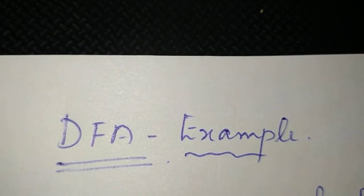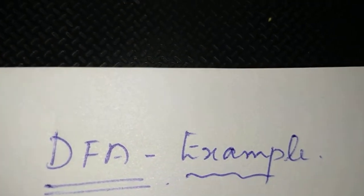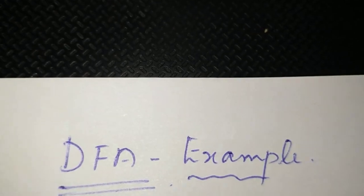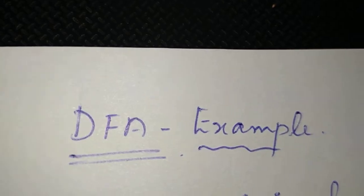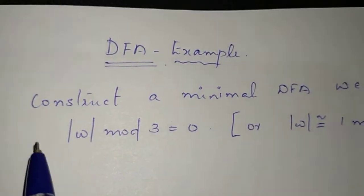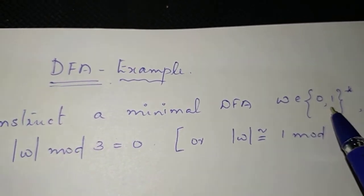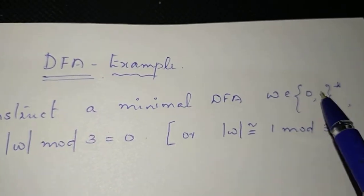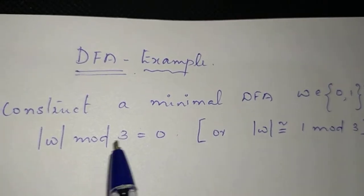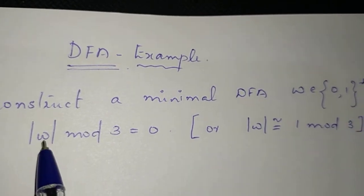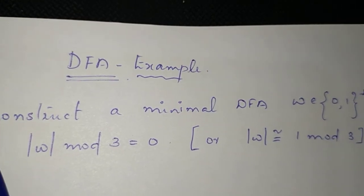In the last video, we learned how to create DFA. In this video, we have a new question: constructing a minimal DFA where w belongs to {0,1}* and mod of w, mod 3 equals 0. This means the string length is a multiple of 3.